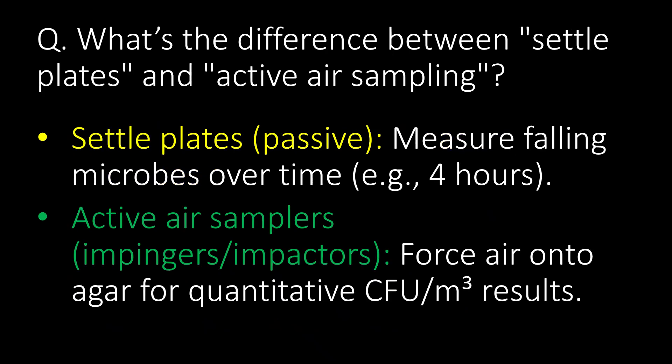What is the difference between settle plates and active air sampling? Settle plates, or passive monitoring, measure falling microbes over time, e.g. 4 hours, whereas active air samplers force air onto agar for quantitative CFU per cubic meter results.